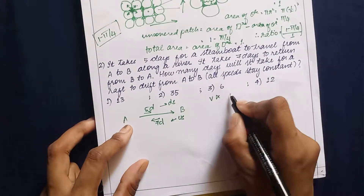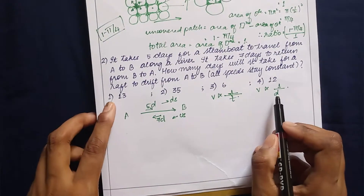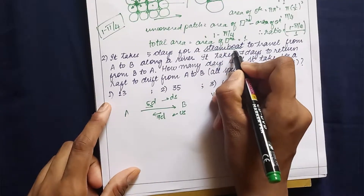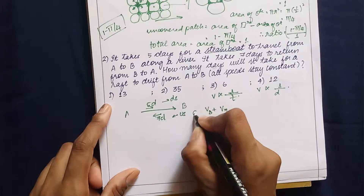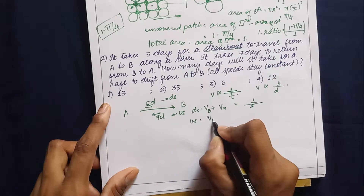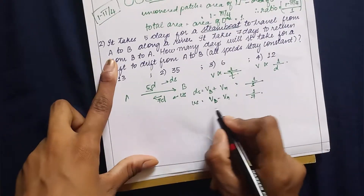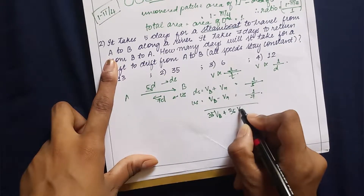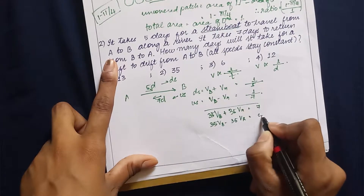Velocity is inversely proportional to time, so velocity is inversely proportional to the number of days. Downstream speed is V_B + V_R (boat speed plus river speed) and takes 5 days. Upstream speed is V_B − V_R and takes 7 days. Taking the LCM and equating: 35(V_B + V_R) = 7 and 35(V_B − V_R) = 5, giving 70 V_B = 12.